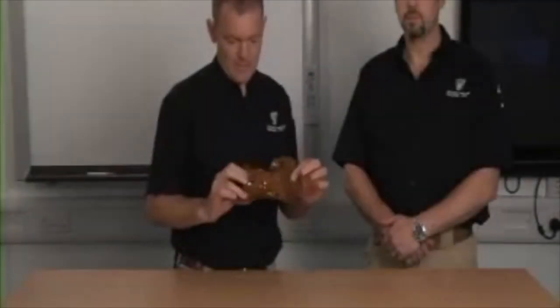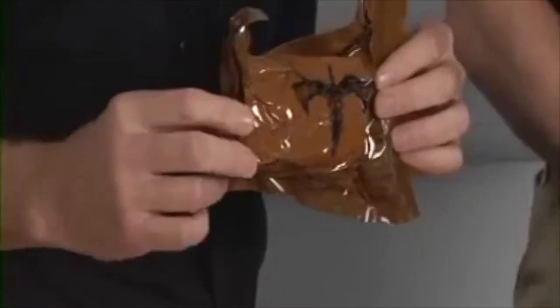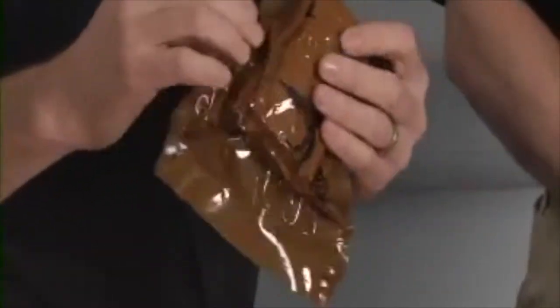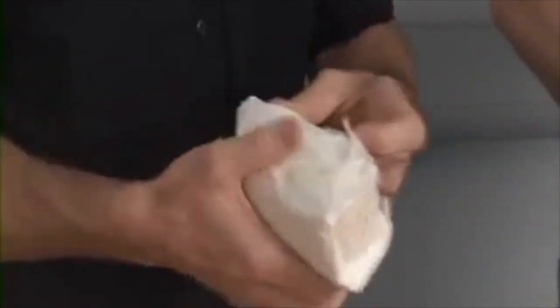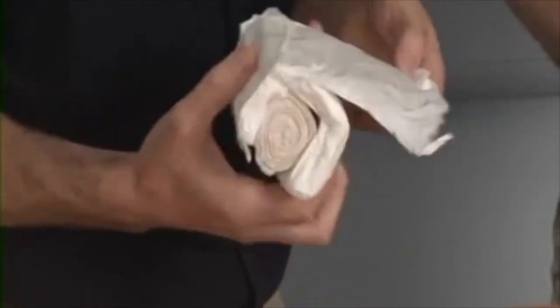The Blast Bandage is found in the Major Hemorrhage Control Pack, comes in a darker material and is torn open at one corner and removed from the packaging. The paper cover is torn off.